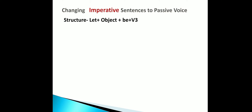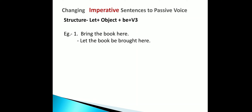For imperative sentences — commands, orders, requests, and suggestions — the passive voice structure is: let + object + be + verb (third form). For example, 'Bring the book here' (an order) becomes 'Let the book be brought here.' Second example: 'Please keep it there' (a request) becomes 'Let it be kept there.'